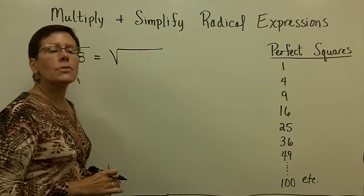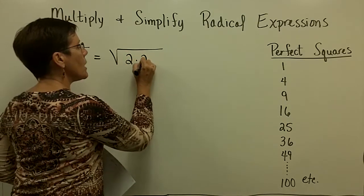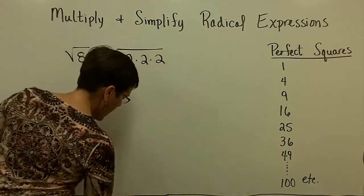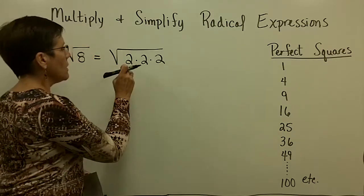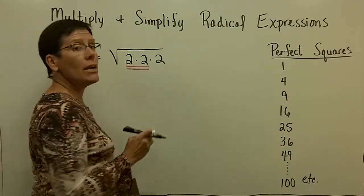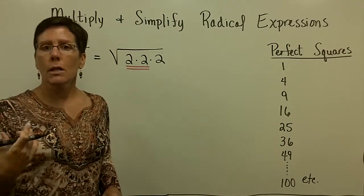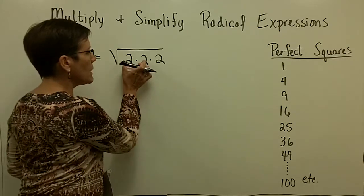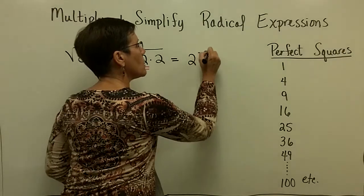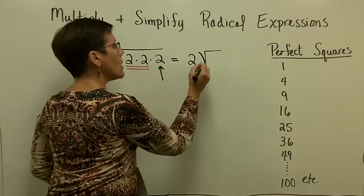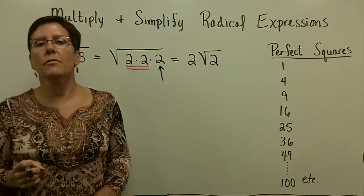So what we do is we say to ourselves, what are the prime factors of the number 8? And the number 8 is equal to 2 times 2 times 2. And if, in those prime factors, we can find a pair, like right here, a pair of 2s, the square root of 2 times the square root of 2 is 2. This right here is equal to just the whole number 2. And I can bring it out from underneath the radical, and I'll leave that lone factor underneath, and I am done. I have simplified this expression.